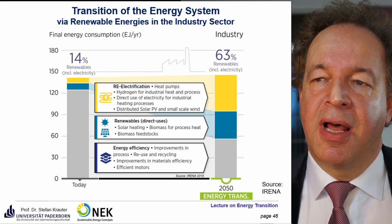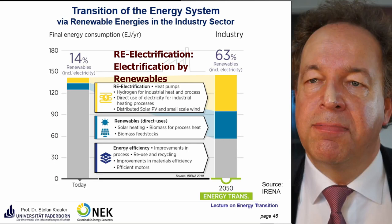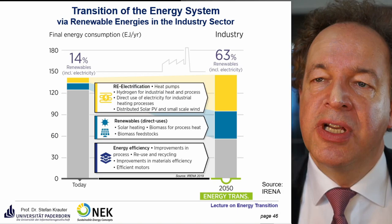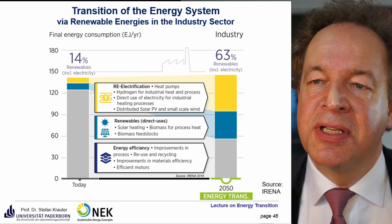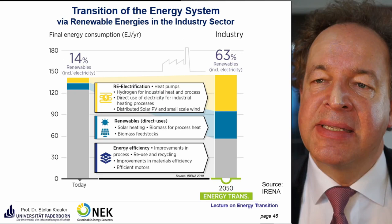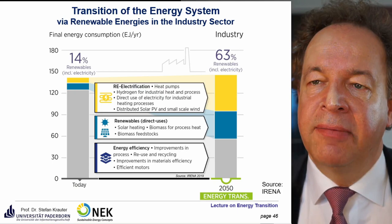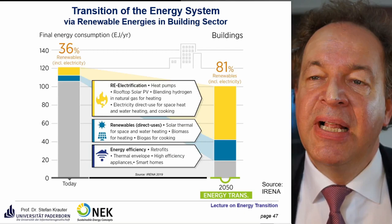In the industry sector, re-electrification options include heat pumps, hydrogen for industrial heat and processes, direct use of electricity for heating, distributed solar PV and small-scale wind, solar heating, biomass for process heat and feedstocks. Energy efficiency improvements through process optimization, reuse and recycling of materials, and the use of efficient motors are also important.